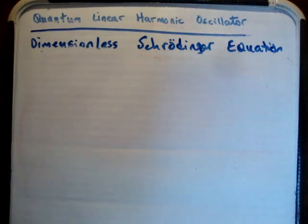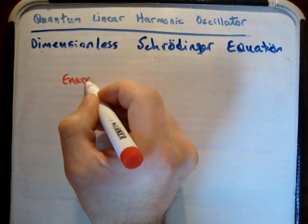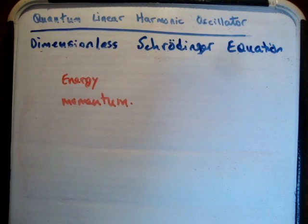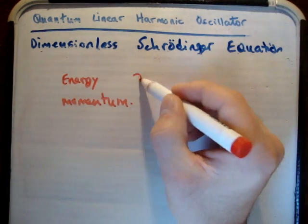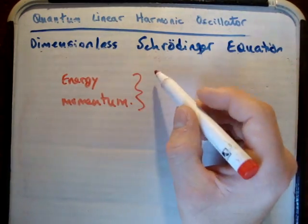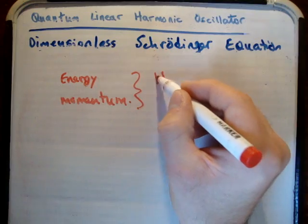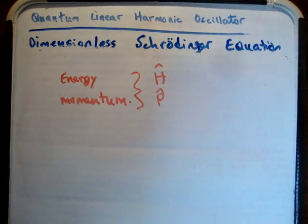I'd first like to talk about some operators. In quantum mechanics, you have observables — quantities like energy and momentum. These are observable quantities: the energy in my system, the momentum, where my particle is. Because of the statistical nature of quantum systems, you have to work it out repeatedly, and the way we do this is by applying things called operators. If you apply your operator on your system, you'll get one of these observables. The operator for energy is the Hamiltonian; the operator for momentum is the momentum operator. We give it a little hat on it to say that it is an operator.